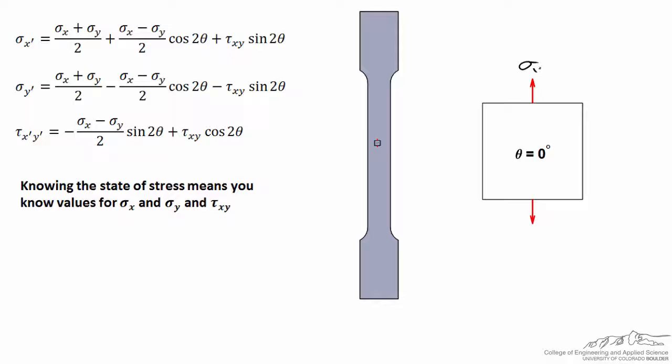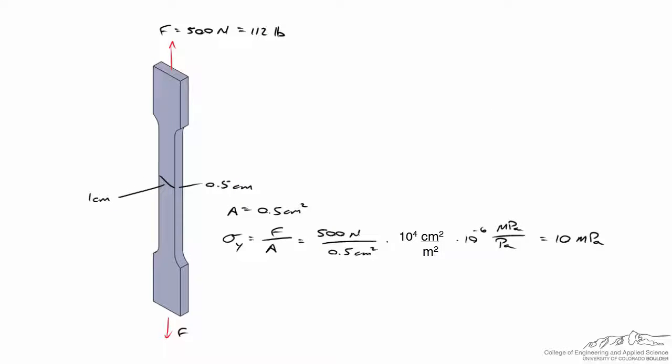However, there is a normal stress in the y direction. We say that is equal to the force divided by the area. For this problem, let's assume that a force of 500 newtons is being pulled on the sample, and we've got a cross sectional area, a centimeter wide, a half centimeter deep, gives us an area of a half square centimeter. Running through the calculations, being careful of units, I find that the normal stress in the vertical direction is equal to 10 MPa.